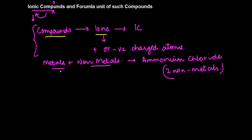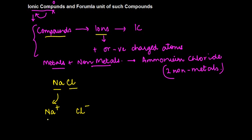Let's take an example of the most commonly used ionic compound, which is sodium chloride. There are others as well, like potassium chloride, but let's talk about sodium chloride. The symbol of sodium is Na+ and chloride is Cl-. Na+ is the positively charged ion, which we call a cation.